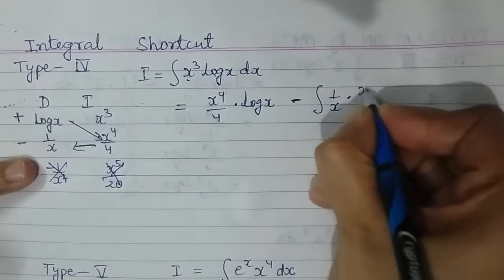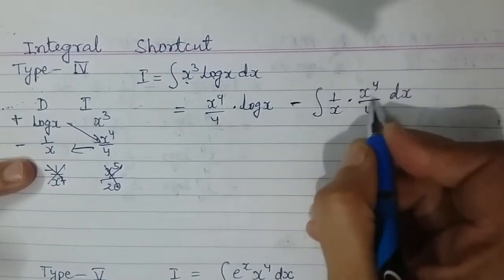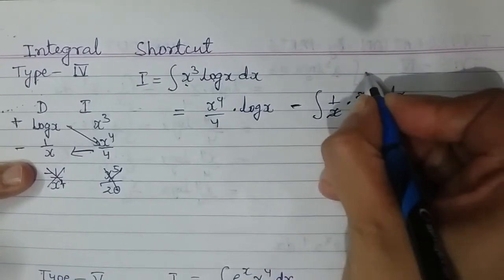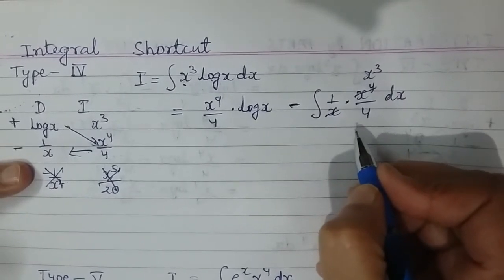Then this one—this is negative, this is positive—so I will be getting minus integral of 1 upon x multiplied by x power 4 upon 4 dx. Here you can easily see that this x will get cancelled with this, and I will be having x cube here.